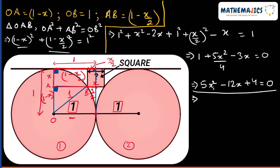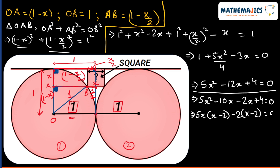Now we have this quadratic equation, so we use middle term splitting: 5x² − 10x − 2x + 4 = 0. Taking 5x common gives x − 2, and taking −2 common also gives x − 2 equals zero.